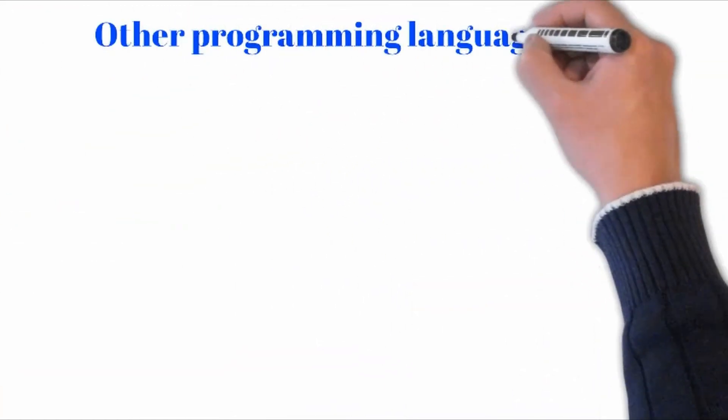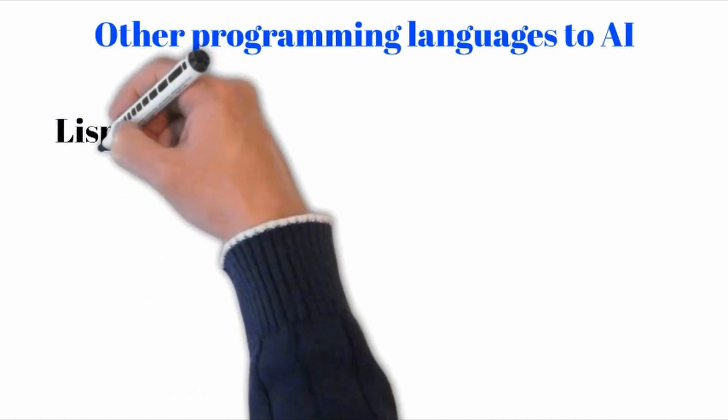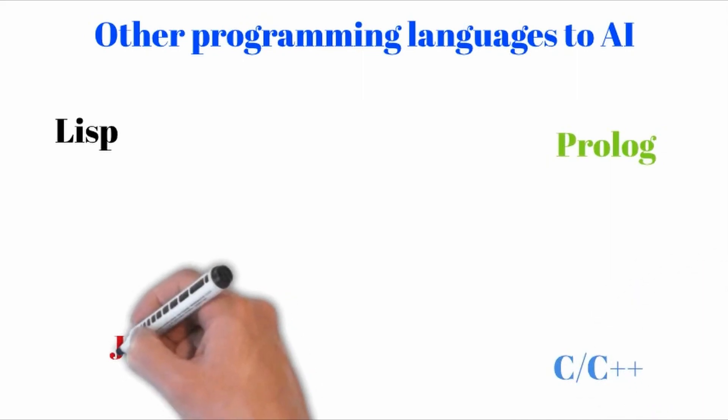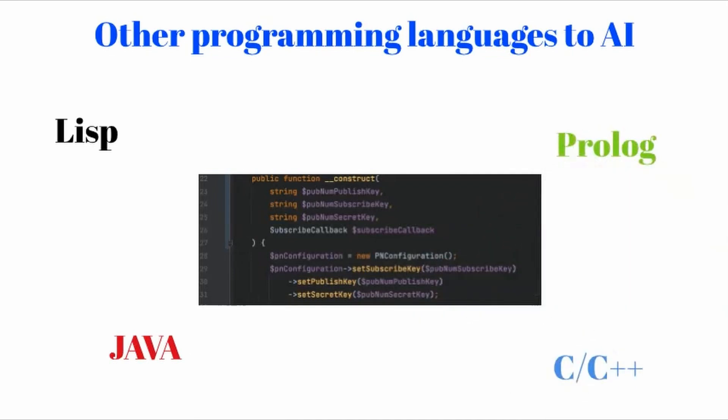There are also other programming languages used for artificial intelligence, such as Lisp, Prolog, C/C++, and Java.